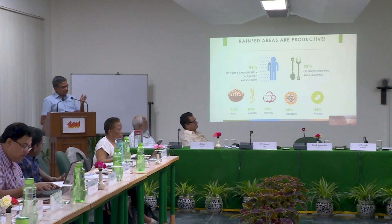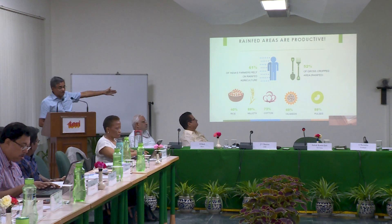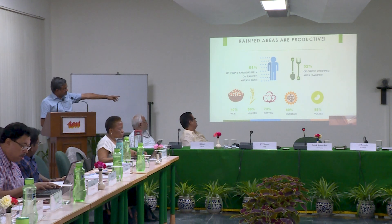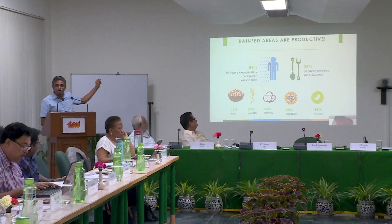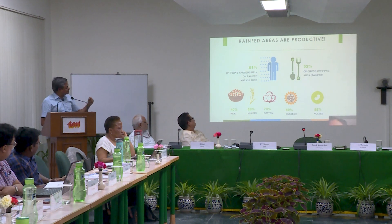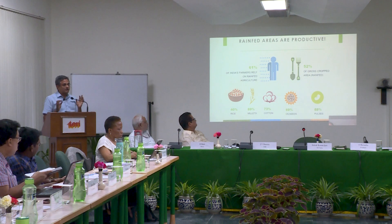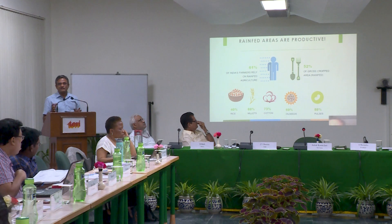Even today, if you look at these areas, this is the kind of contribution they are making to the agriculture economy: 40% of rice comes from rain-fed areas, 89% of millets, 73% of cotton, 69% of oil seeds and pulses, 68%. 62% of the farmers depend on rain-fed areas. 52% of the gross cropped area is in rain-fed. These are the metrics — these lands are productive, they are producing, they are actually contributing to the nutrition of the country.